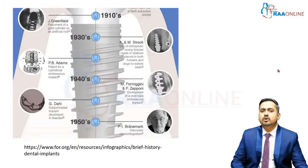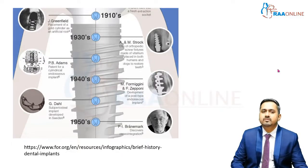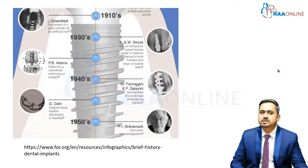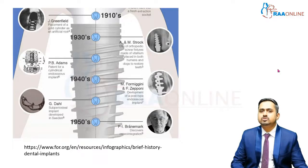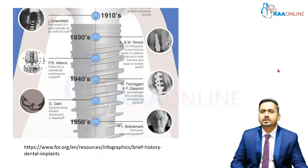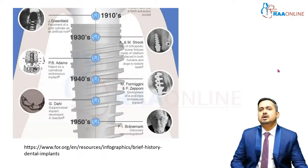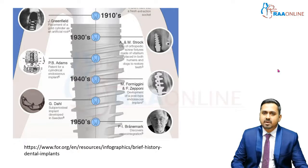Moving on to the 19th century, starting with Greenfield, who placed a gold cylinder as an artificial root. In 1930, orthopedic screws used in general orthopedics were adopted for use as dental implants.